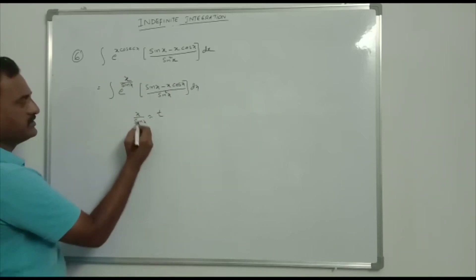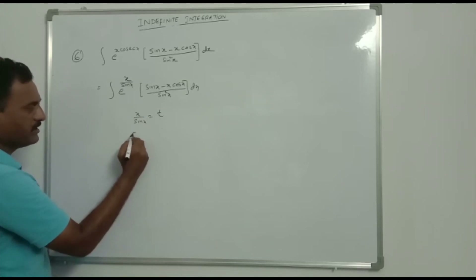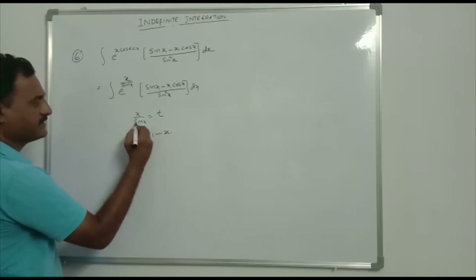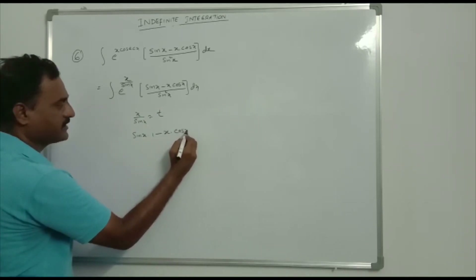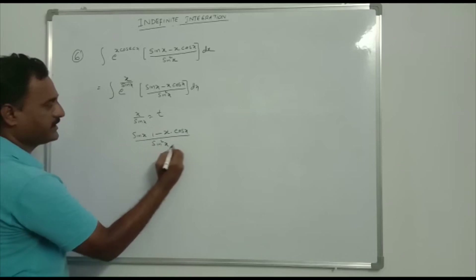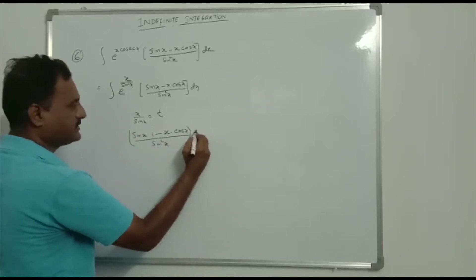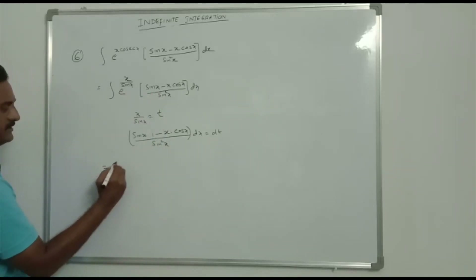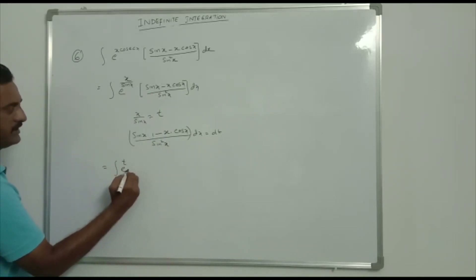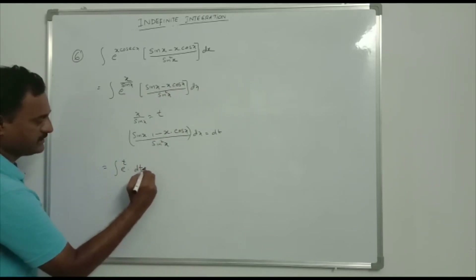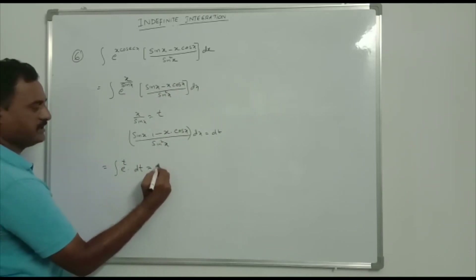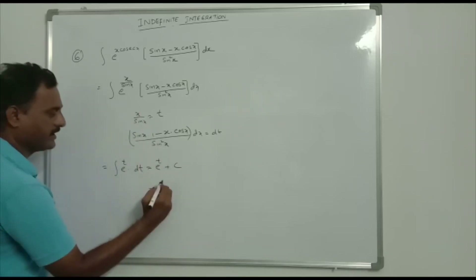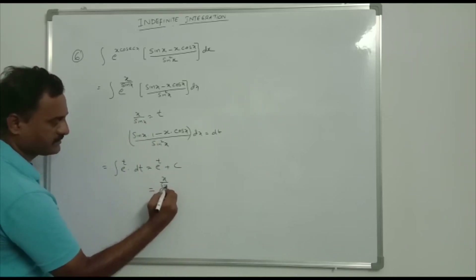Take differentiation on both sides. It is in the form of u/v: derivative of (x/sin x) is (sin x · 1 - x · cos x)/sin²x, so dx equals dt. Substituting, integration of eᵗ · dt = eᵗ + c. That is equal to e^(x/sin x) + c.